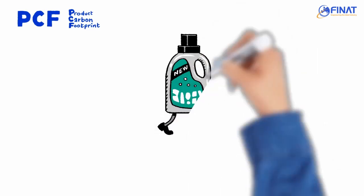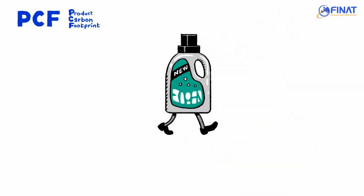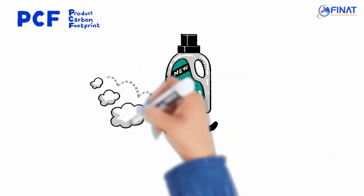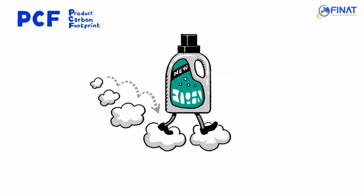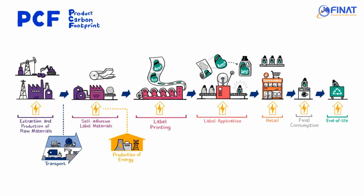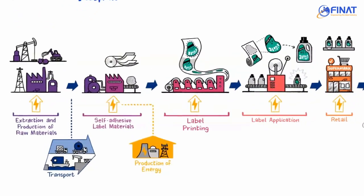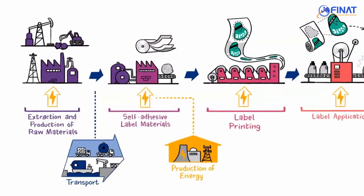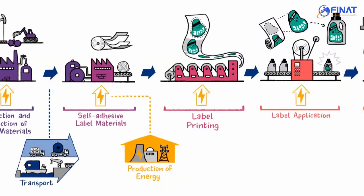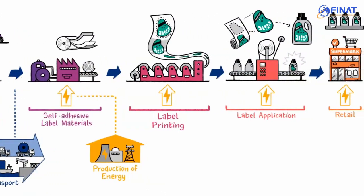The Product Carbon Footprint communicates the amount of greenhouse gas emissions that are produced or consumed during the life cycle of a product. This can include all the stages of the use of a product, from its production to its final end of life.